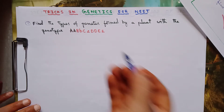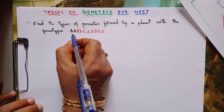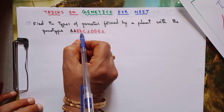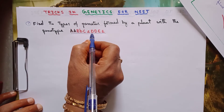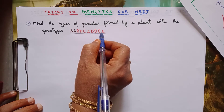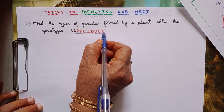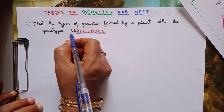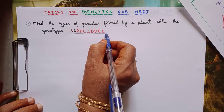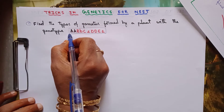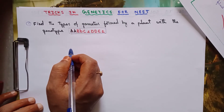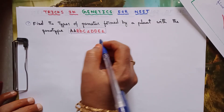The genotype is: capital A capital A, capital B small b, capital C small c, capital D capital D, capital E small e. So the plant has this genotype. Now from this plant, how many types of gametes will be formed?